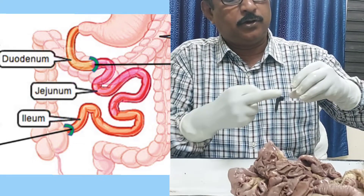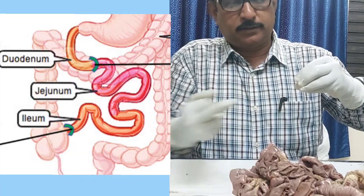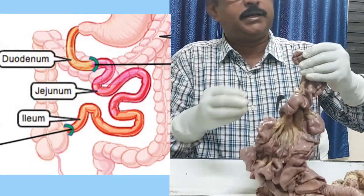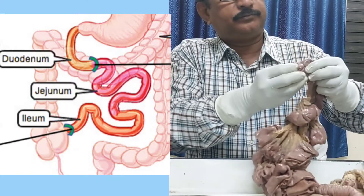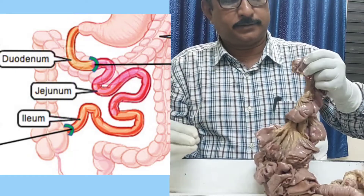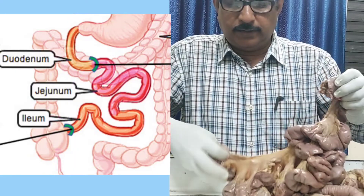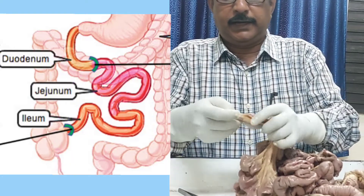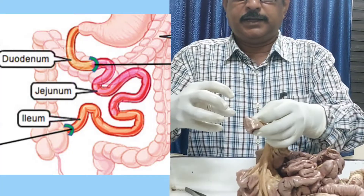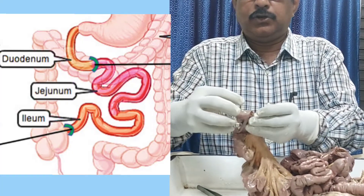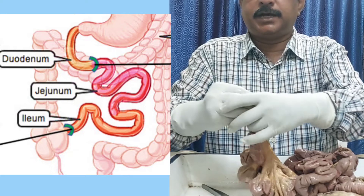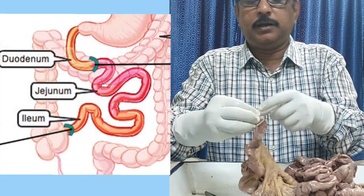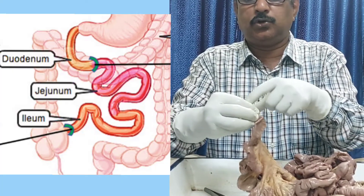So the jejunal opening is directed anteriorly, inferiorly, and towards the right side. I will hold the jejunal side in this way — anteriorly and towards the right side. The ileal end, on the other hand, ends in the cecum. If the cecum is on the right side, the ileum ends there at the ileocecal junction. So my hand represents the cecum and here is the ileal opening — this is the ileocecal junction. The ileum ends into the cecum at what is called the ileocecal or ileocolic junction.